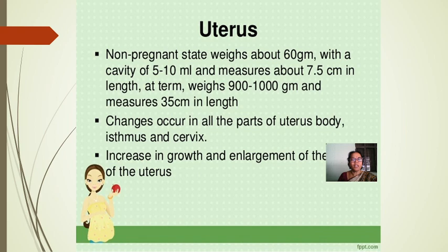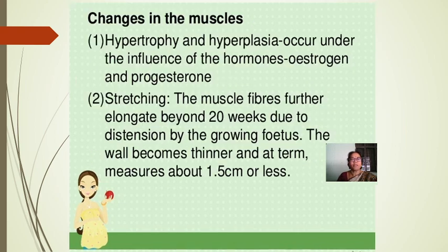There is an increase in growth and enlargement of the body of the uterus. In the muscles, hypertrophy and hyperplasia occur under the influence of estrogen and progesterone, and stretching of the muscle fibers also takes place. Beyond 20 weeks, due to distension by the growing fetus, the wall becomes thinner.